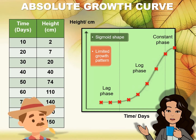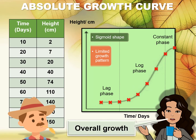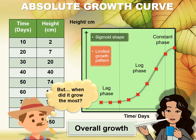So if you wonder what is the role of this graph, you find that it shows us the overall growth in the plant — evidence that the plant is growing. But then, how do we know when it did the most growing? For that, we need to look at the second graph.